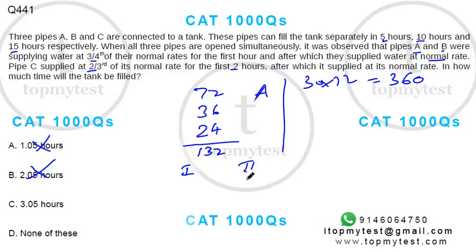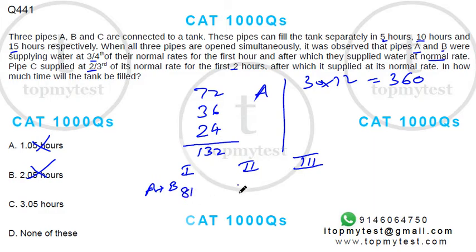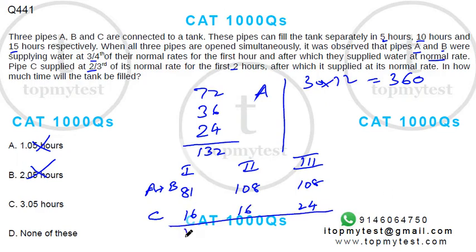In the first hour, A and B work at three-fourths capacity. Together A and B normally fill 108 liters per hour, so at three-fourths rate they fill 81 liters. C works at two-thirds rate for the first two hours: two-thirds of 24 is 16 liters per hour. So in hour one: 81 + 16 = 97 liters. In hour two: 108 + 16 = 124 liters. From hour three onward: 108 + 24 = 132 liters per hour.